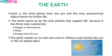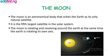The Earth rotates on its own axis once in 24 hours and revolves around the Sun in 365.25 days — that is one year. The Moon is an astronomical body that orbits the Earth as its natural satellite.